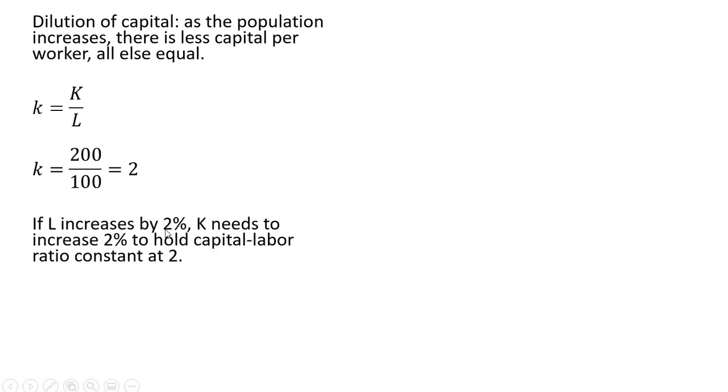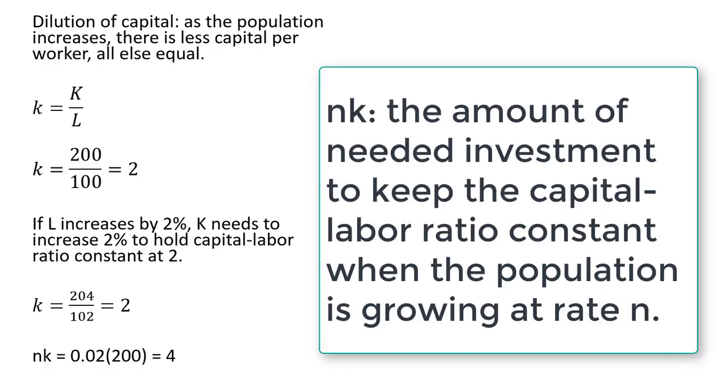If L increases by 2%, capital needs to increase 2% to hold the capital labor ratio constant at 2. So if the labor force increases by 2%, capital needs to increase also by 2%. In this case, nk = 0.02(200) = 4.